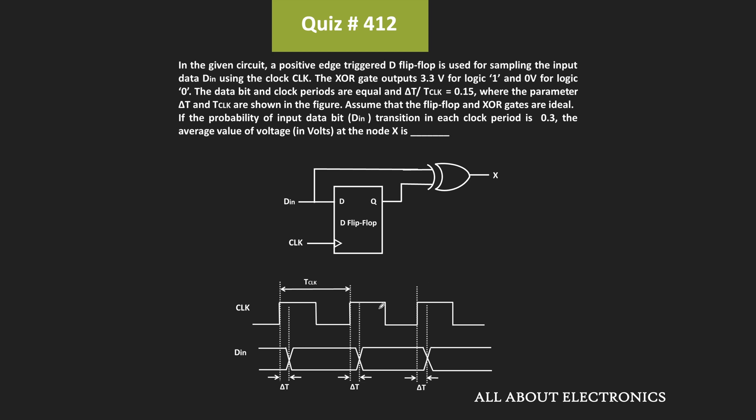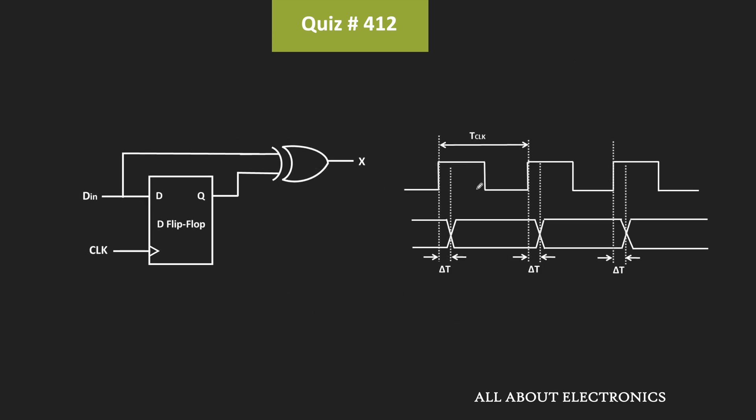In this question, the input signal DIN is sampled at every clock using the given circuit. For the given XOR gate, logic 1 corresponds to 3.3V while logic 0 corresponds to 0V. The time period of the clock signal as well as the data signal are both the same, but the data signal is slightly delayed with respect to the clock signal by delta t time. Here, delta t divided by T_clock is equal to 0.15.